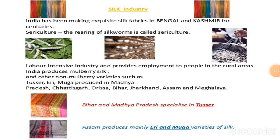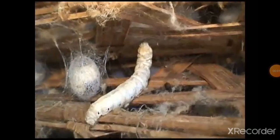Next, the silk industry. India has been making silk fabrics in Bengal and Kashmir for centuries. Sericulture is the rearing of silkworms; the process of rearing silkworms is called sericulture. It is a labor-intensive industry, meaning a lot of labor is involved in silk production. It provides employment to people in rural areas. India produces mulberry silk. Other varieties are also available: Tassar, Eri, and Muga. These are produced in Madhya Pradesh, Chhattisgarh, Orissa, Bihar, Jharkhand, Assam, and Meghalaya.